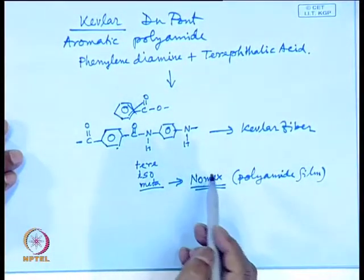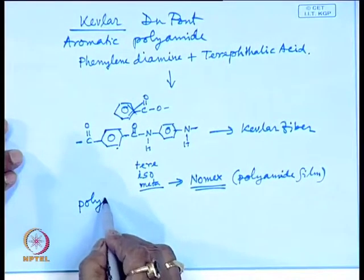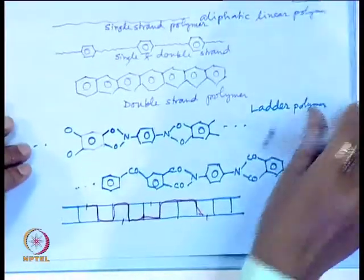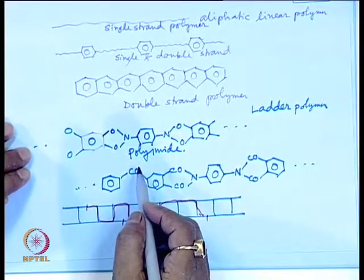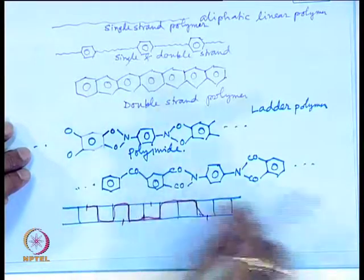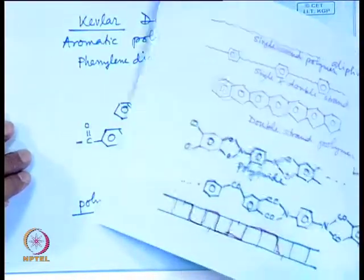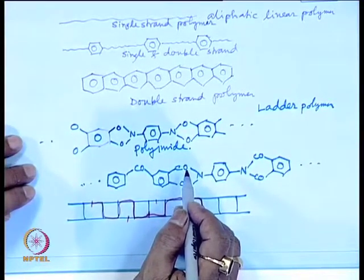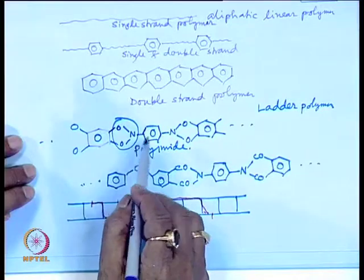Aromatic polyamides such as polyimides are not easily processable — melt processing is not possible. When this kind of polyimide was developed it was abandoned due to lack of processability, but scientists could develop processability through the route of polyamide acid. Once the imide ring is formed it is difficult to further process.